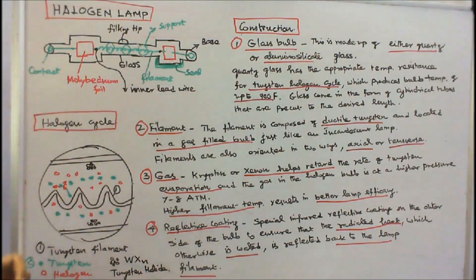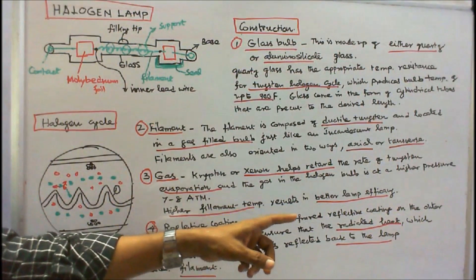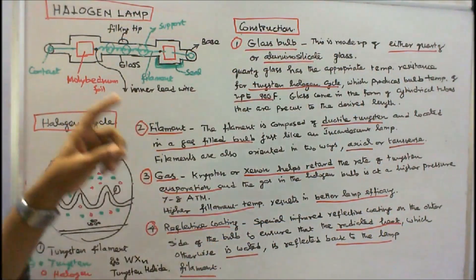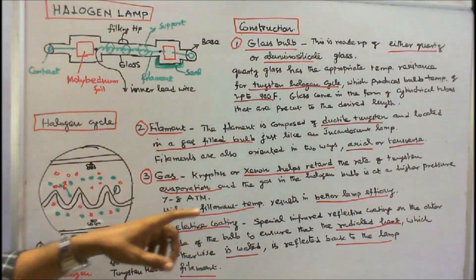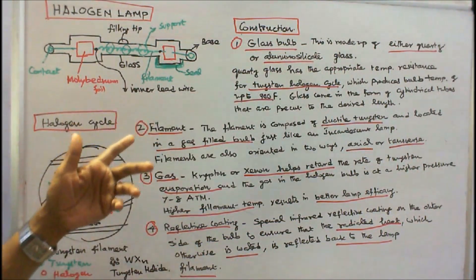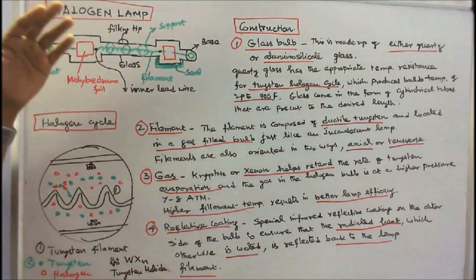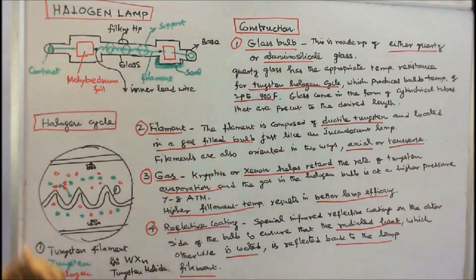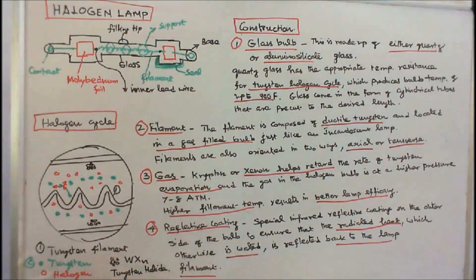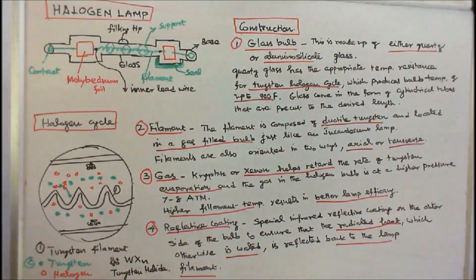Component four is a reflective coating — a special infrared reflective coating on the outer side of the bulb. This ensures that radiated heat, which would otherwise be wasted, is reflected back to the lamp filament. We need only light, not heat; so the heat is redirected back to the filament. This concludes the constructional detail of a halogen lamp.